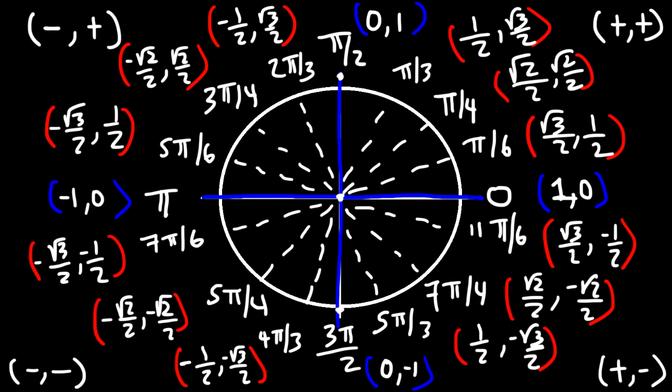Continuing: π is 180 degrees. Then 7π/6 is 30 times 7, which is 210. Then 5π/4 is 5 times 45, which is 225. Then 4π/3 is 4 times 60, which is 240. Then 3π/2 is 3 times 90, which is 270. Then 5π/3 is 5 times 60, which is 300. Then 7π/4 is 7 times 45, which is 315. And 11π/6 is 11 times 30, which is 330. That's how you can quickly populate the degree measures on the unit circle.